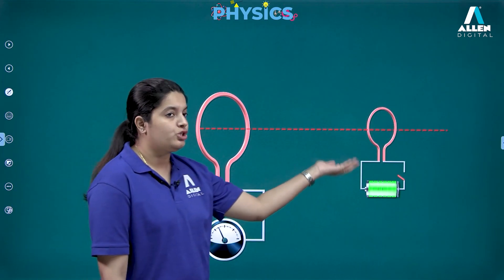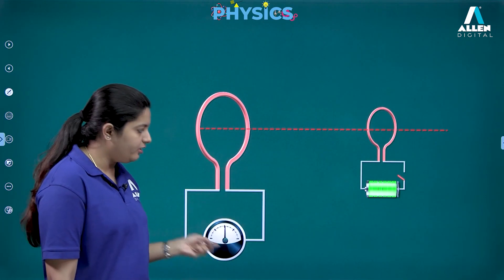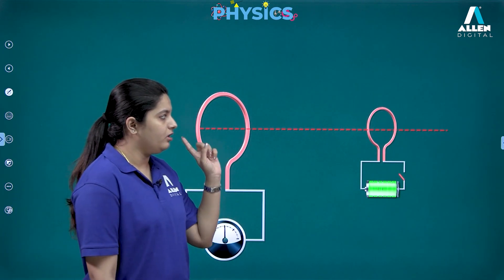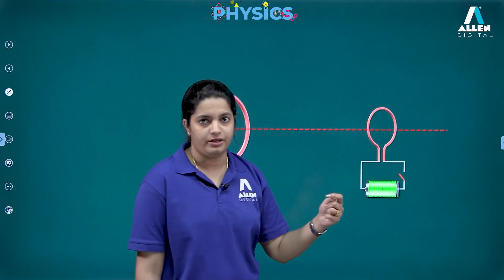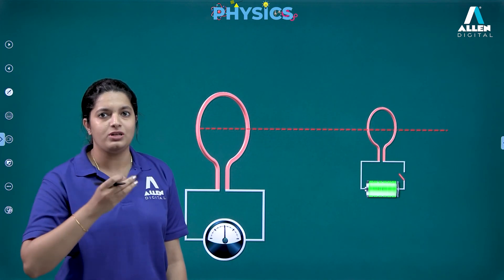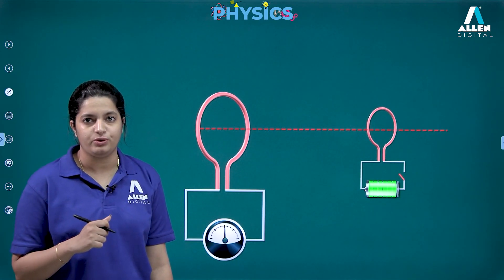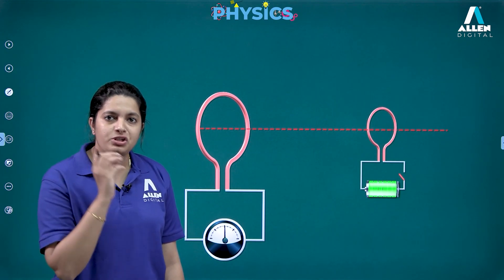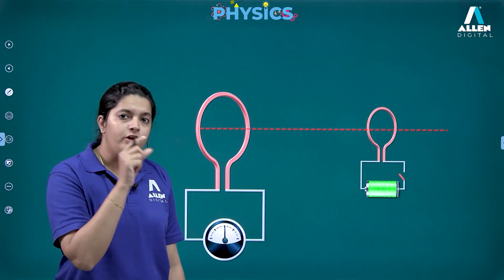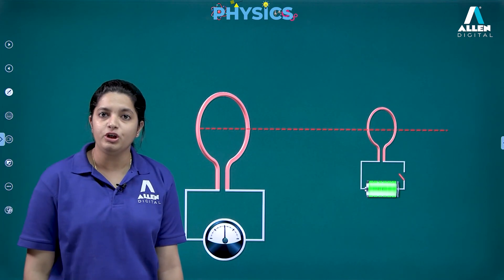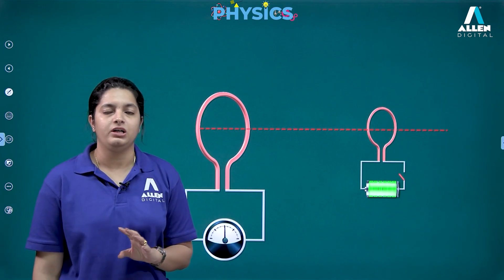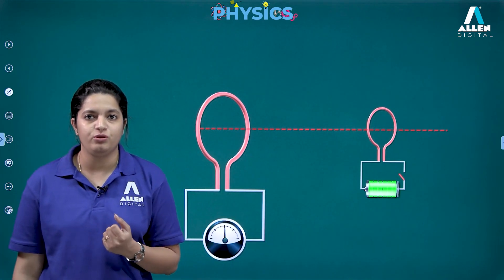After a certain point, when the current became constant in the circuit, no current was again observed in the primary coil. When he switched off the circuit, there was again some deflection in the galvanometer. So deflection was observed only for the brief fraction of time when current was increasing or decreasing — not when it was constant.